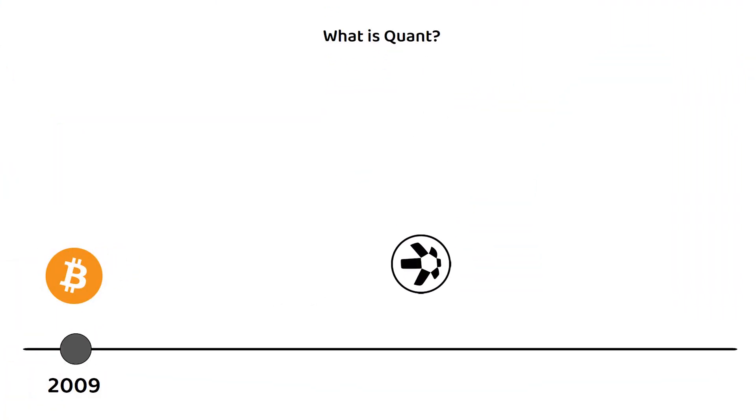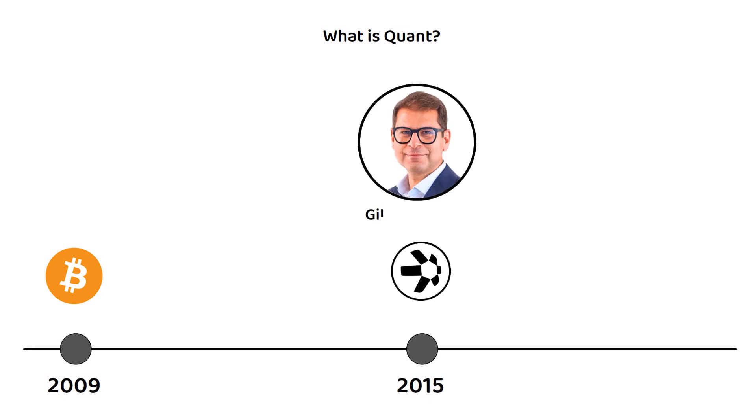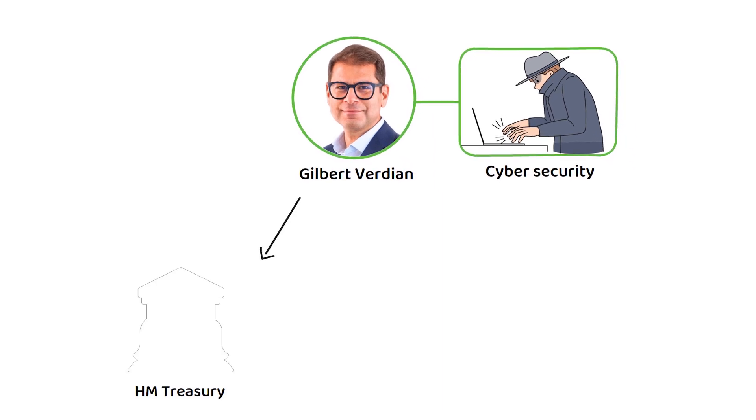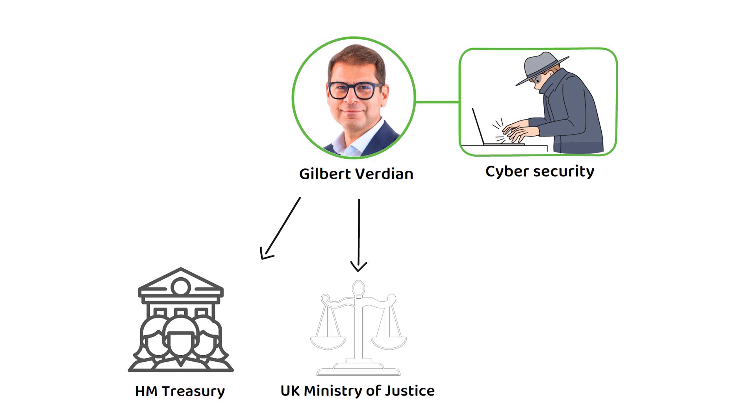Quant was founded in 2015 by Gilbert, who acts as CEO with a network going live in 2018. Gilbert has an interesting cryptocurrency career path, having spent most of his time in cyber security related roles. This includes working for the HM Treasury, the UK Government's Economic and Finance Ministry, the UK Ministry of Justice, HSBC, and others, all in various cyber security positions.